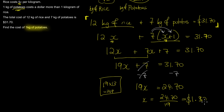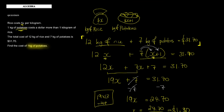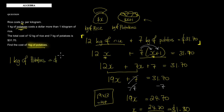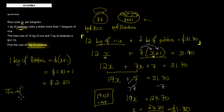But we're not done yet — we want the cost of a kilogram of potatoes. We know a kilogram of potatoes costs x plus one dollars. Since x is $1.30, that means potatoes cost $1.30 plus $1.00, which equals $2.30. Therefore, one kilogram of potatoes costs two dollars and thirty cents.